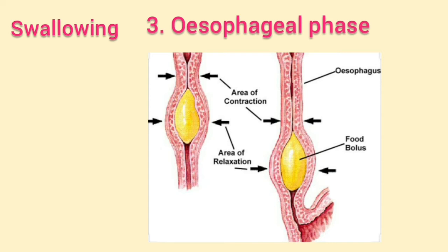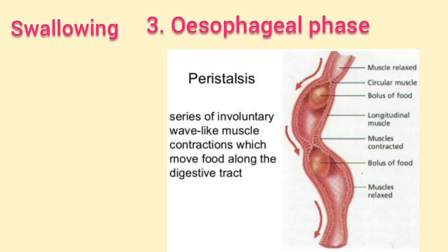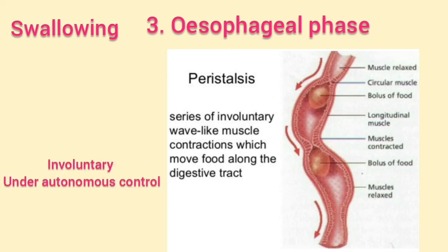Contraction of the circular muscles narrows the esophagus behind the bolus, squeezing food downward. Contraction of the longitudinal muscles in front of the bolus widens and shortens that section. These coordinated contractions and relaxations produce a wave-like motion that propels food into the stomach — this action is called peristalsis. It is involuntary and under the control of the autonomic nervous system.